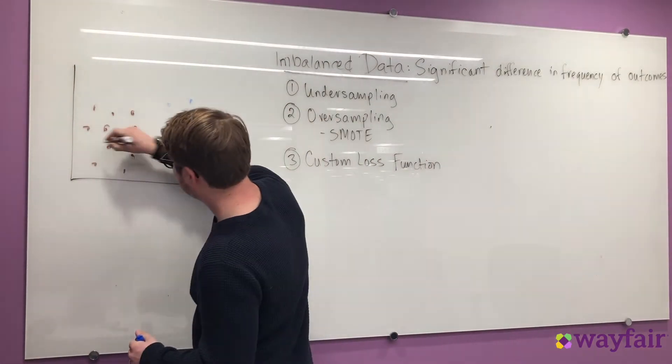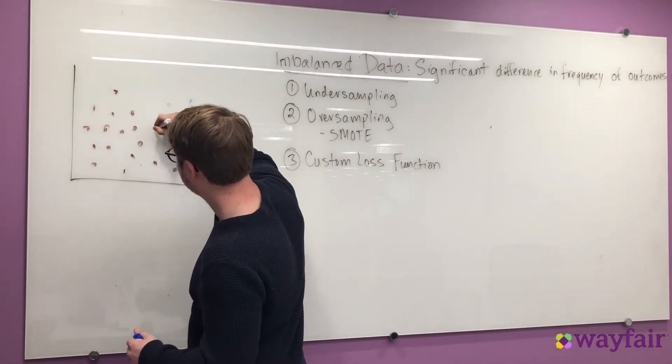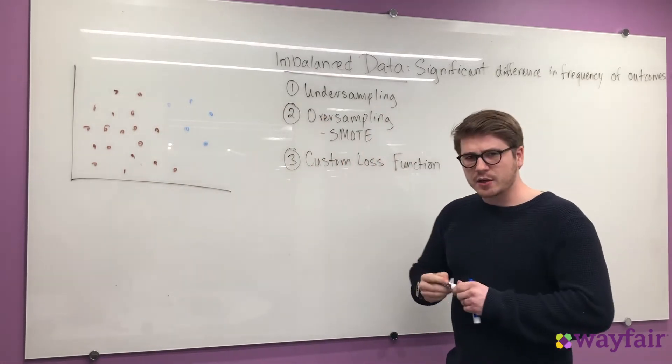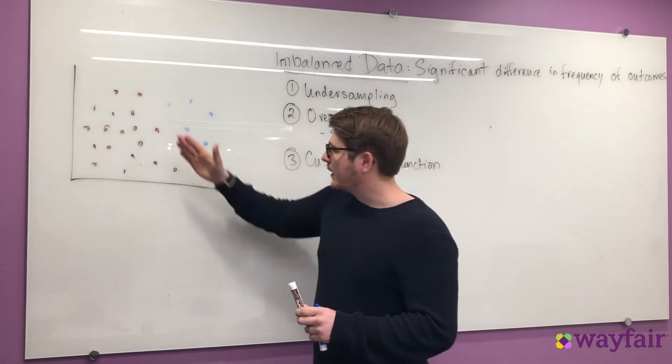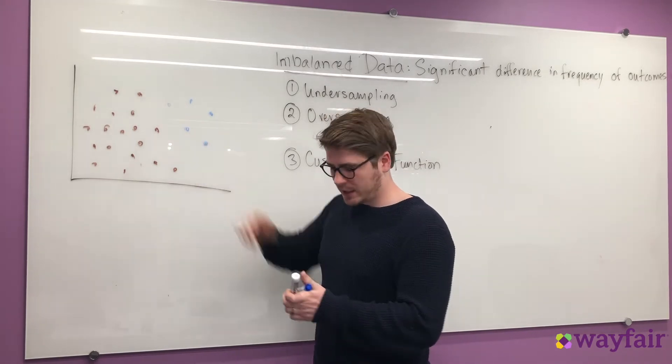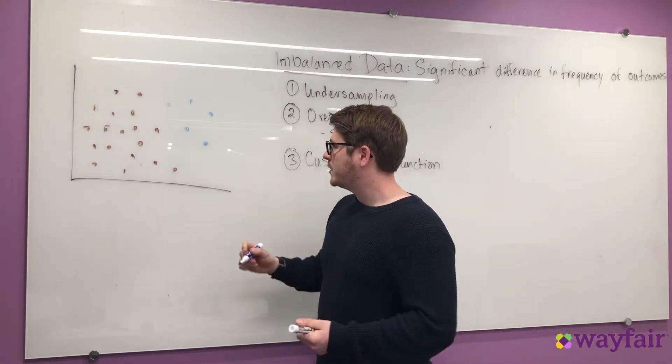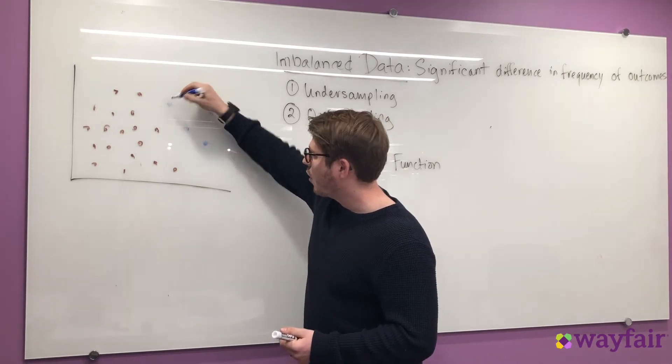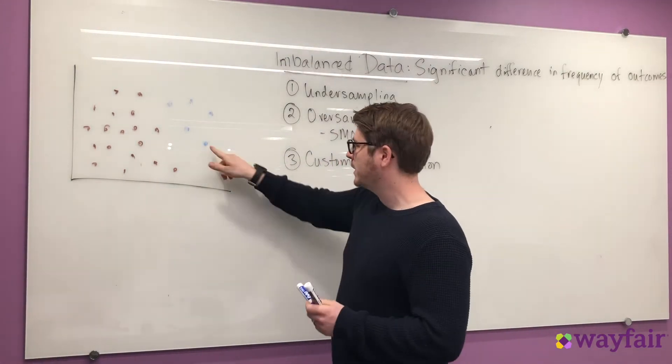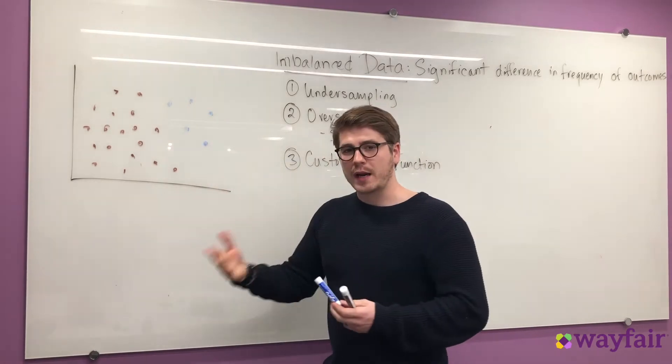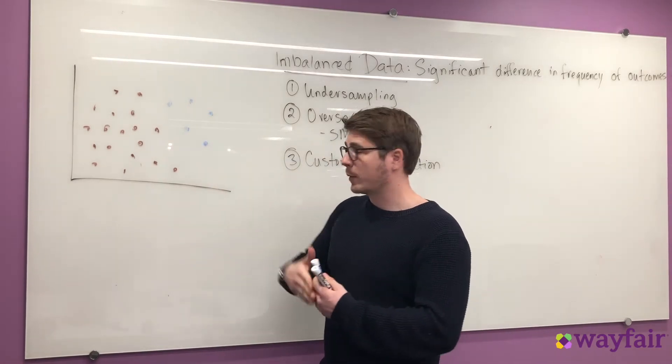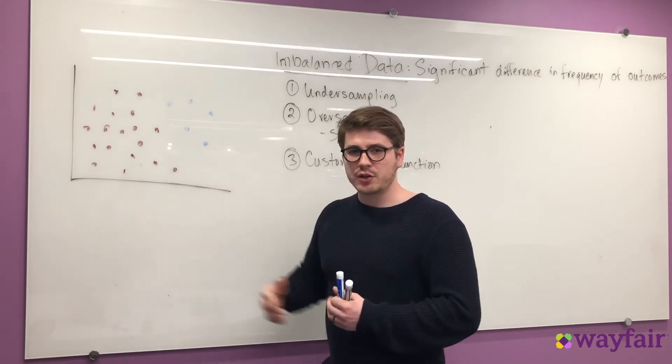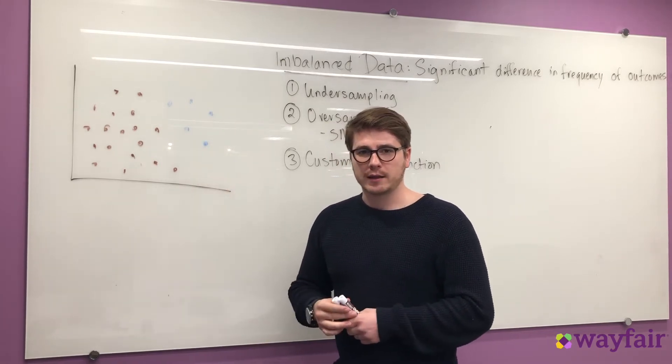Another technique that we can commonly use is oversampling. Standard oversampling keeps the entirety of the majority data set, but what we do is we repeat samples of the minority set over and over. So we would randomly choose one of these data points to train on and we would repeat these data points over and over until we have a ratio that makes the data more balanced.